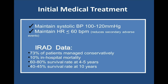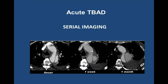We target a blood pressure between 100 and 120 systolic, a heart rate of less than 60, usually with beta blockers and other medications. The goal is to prevent propagation of the dissection, stabilize the aorta, and prevent aneurysm formation. From IRAD data, approximately 73% of acute type B aortic dissections can be managed conservatively with medical therapy. In-hospital mortality is approximately 10%, and survival is pretty good. Medical management means serial imaging of the aorta over hours, days, and sometimes weeks to evaluate evolution of the dissected aorta.